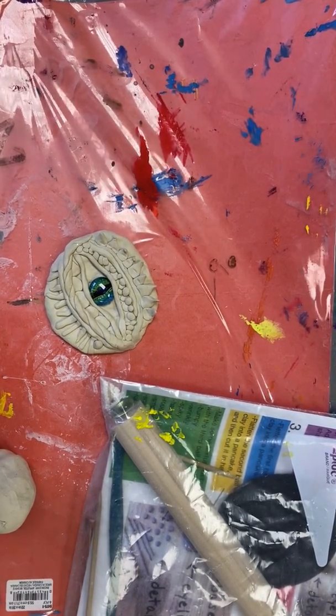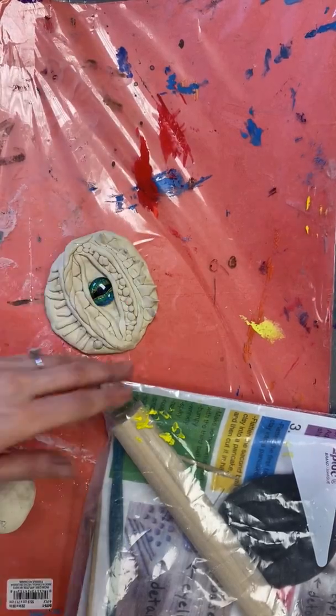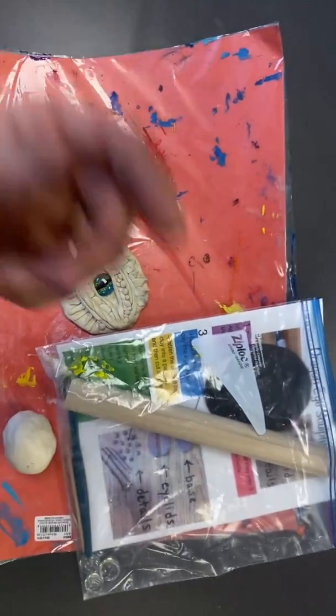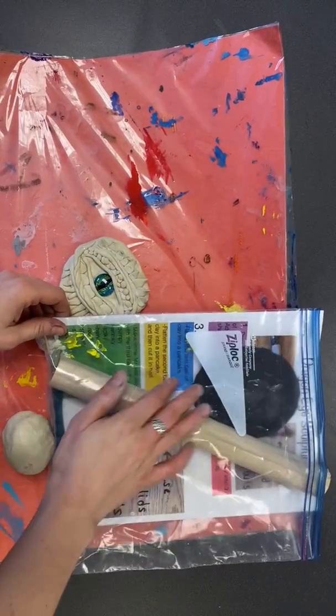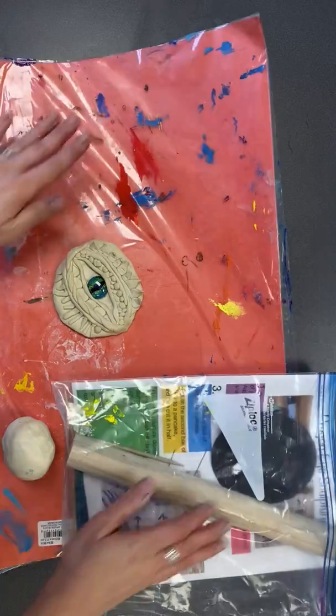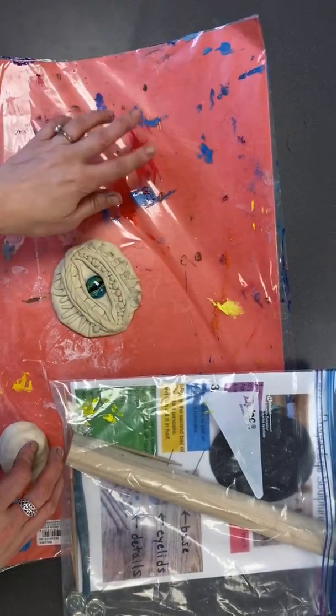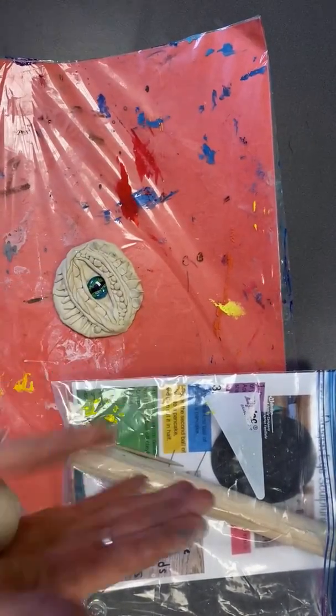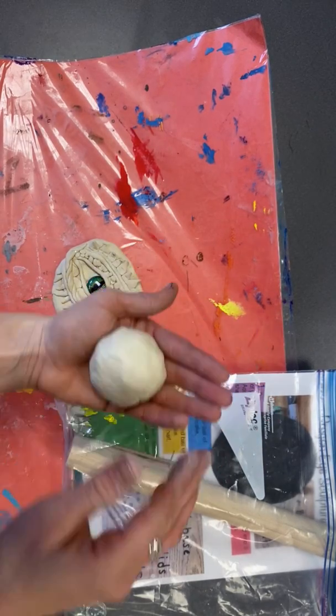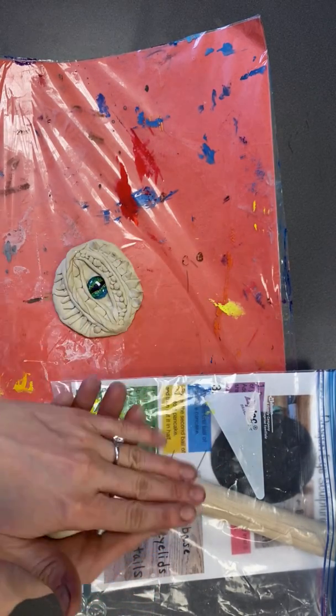All right, boys and girls, when we start our Dragon Eyes today, you are going to start by grabbing your sculpture bag. This has everything that you need, your directions and some tools inside. You need a messy mat on your table. You are not allowed to put clay on your table without a messy mat. And you need to see me for a ball of clay. This will be a small ball of clay.